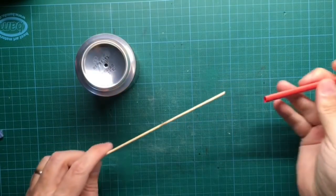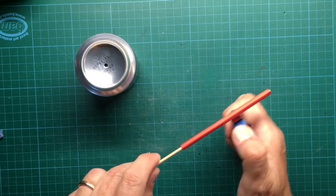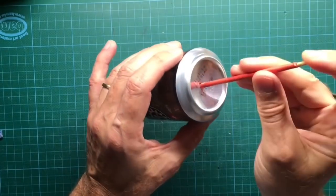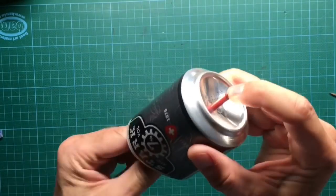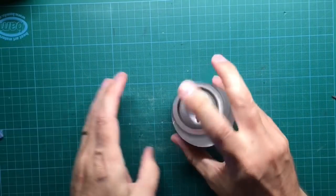Put some shrink tubing around a grill stick and use a lighter to shrink it. Put the grill stick through the hole you punched and fix it with hot glue.